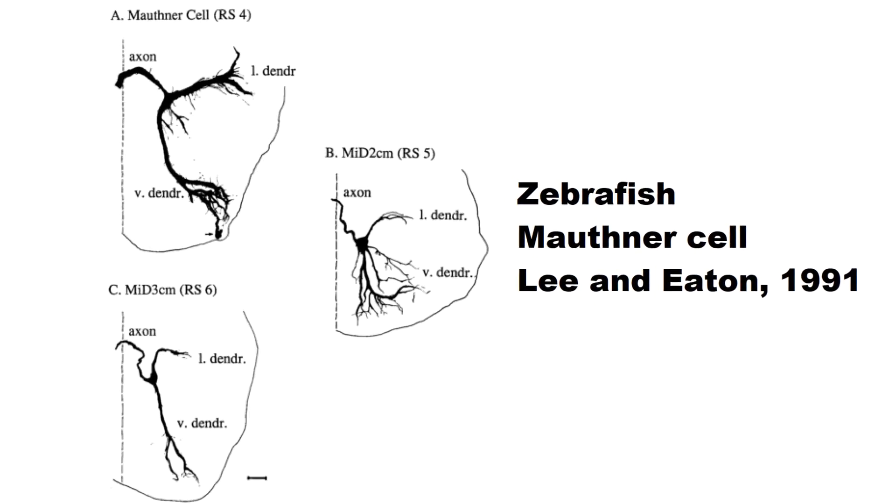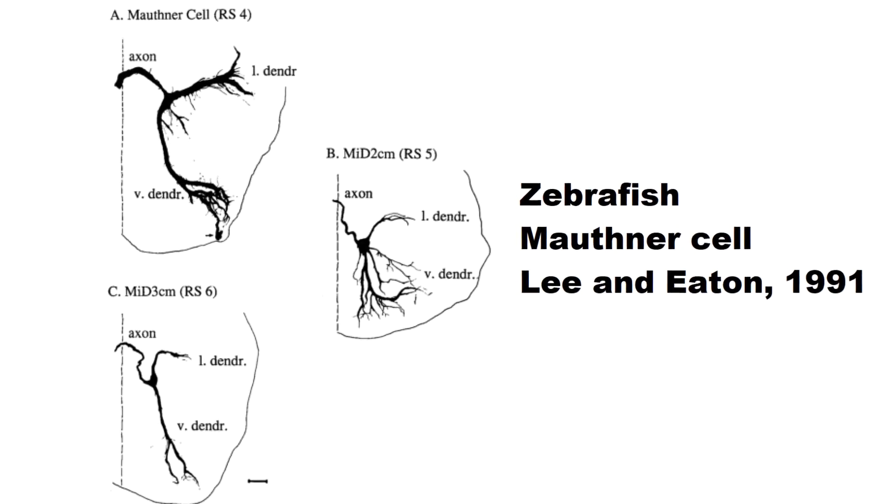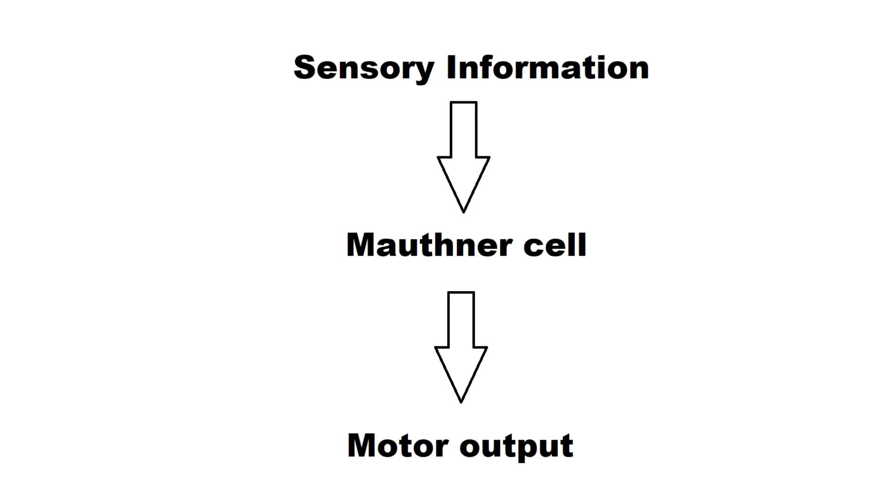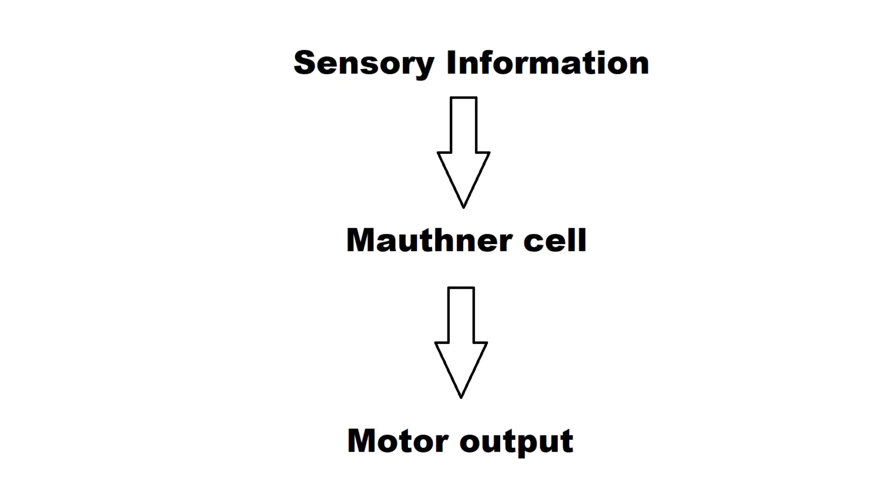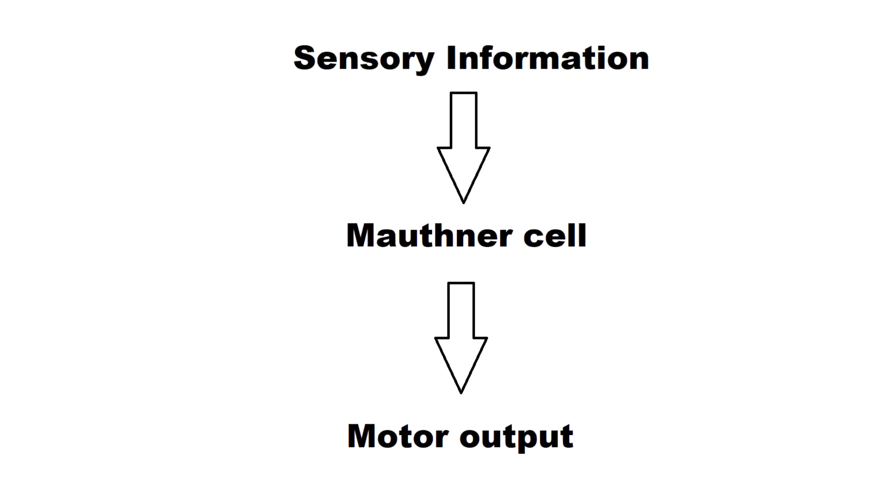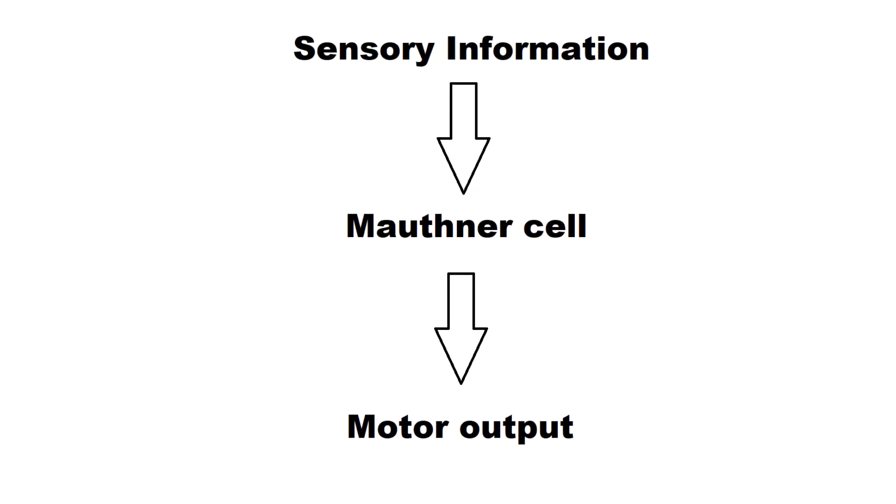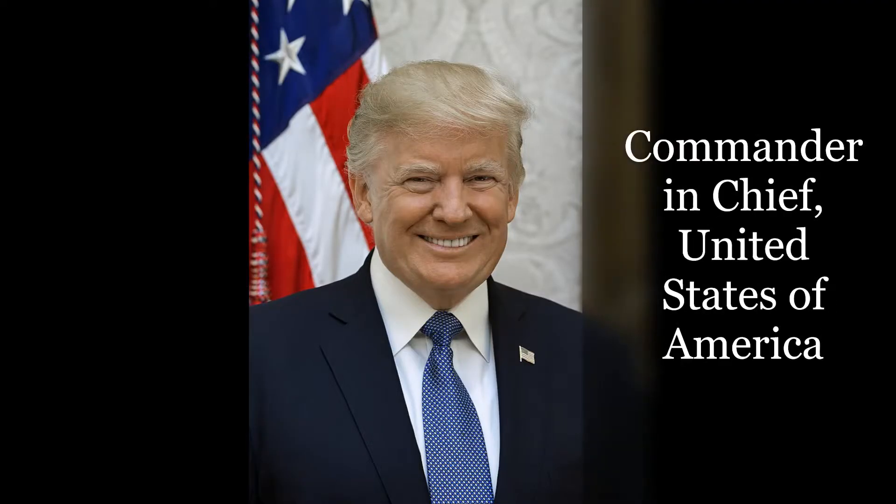Note the large axon and the large dendrites of the Mauthner cell, optimized for fast conduction. The Mauthner cell is a command neuron which pools sensory information and then decides on a motor output, just like the commander of a military force.